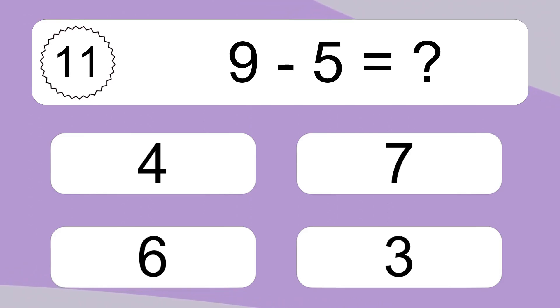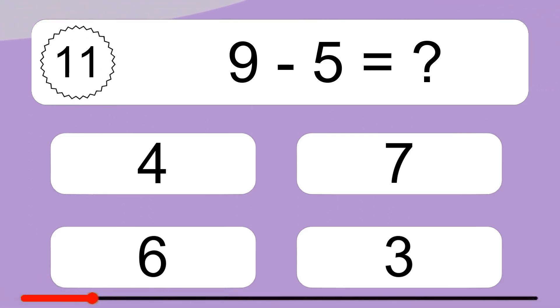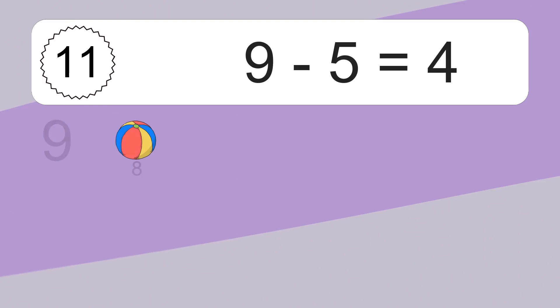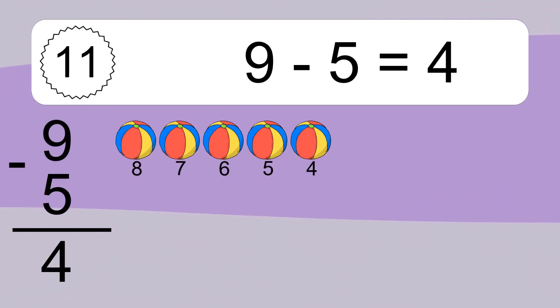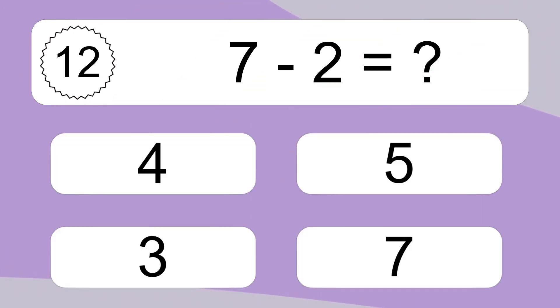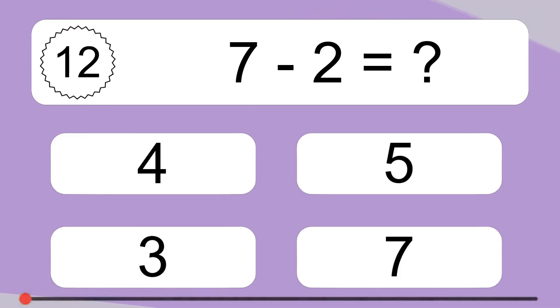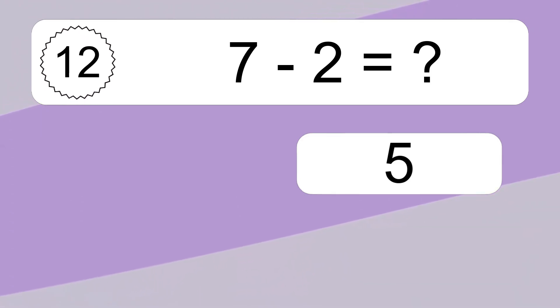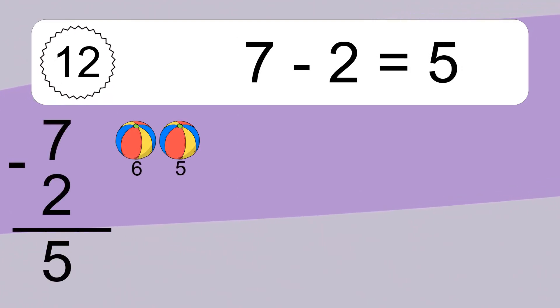9 minus 5 equals what? 9 minus 5 equals 4. Let's count it: 8, 7, 6, 5, 4. 7 minus 2 equals what? 7 minus 2 equals 5. Let's count it: 6, 5.